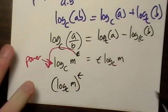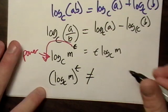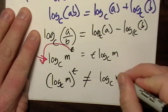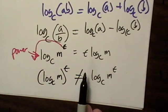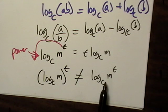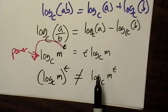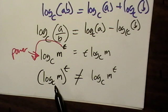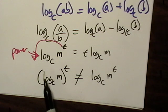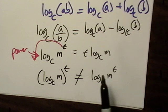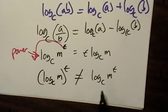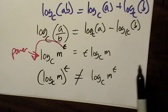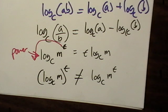If you run into this, this is not equal to... See, basically, this is the log of m raised to the t. This over here is something different, completely different. This is c to the what power equals m raised to the t. This is c to the what power equals m to the t. So, that's a totally different thing right there.